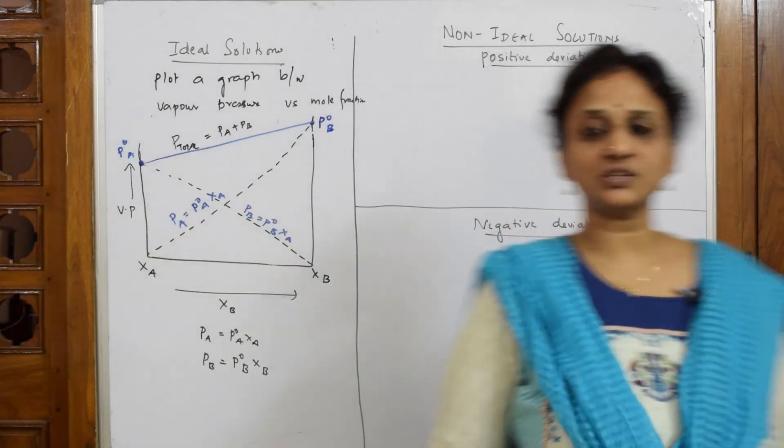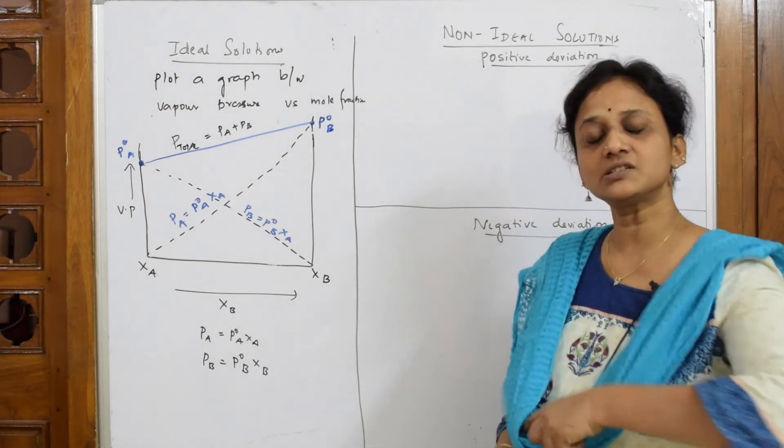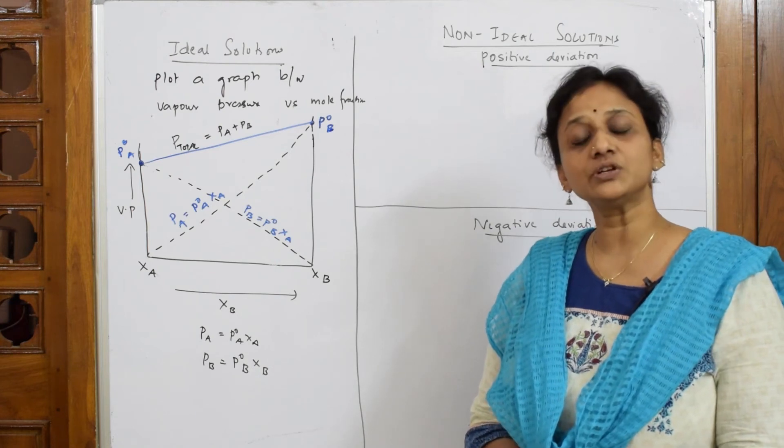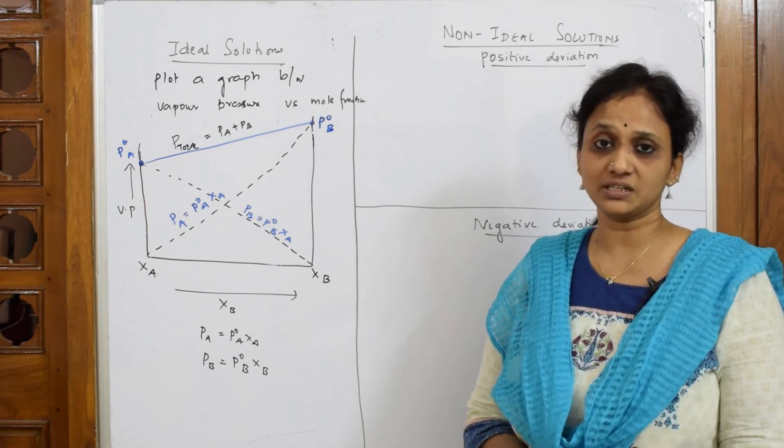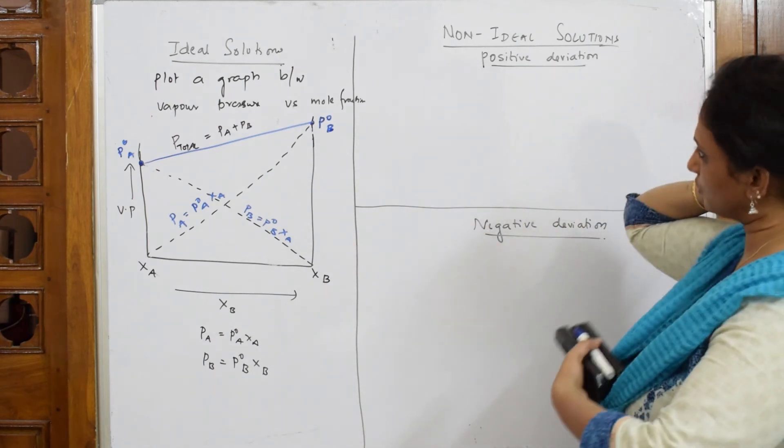Now, the same thing, suppose if I take, I have given you positive and negative deviations. I said, in non-ideal solutions, they do not obey Raoult's law because you have a non-volatile solute in that and because mixing and volume is different. So, you get two types of variations in this graph. How to draw?